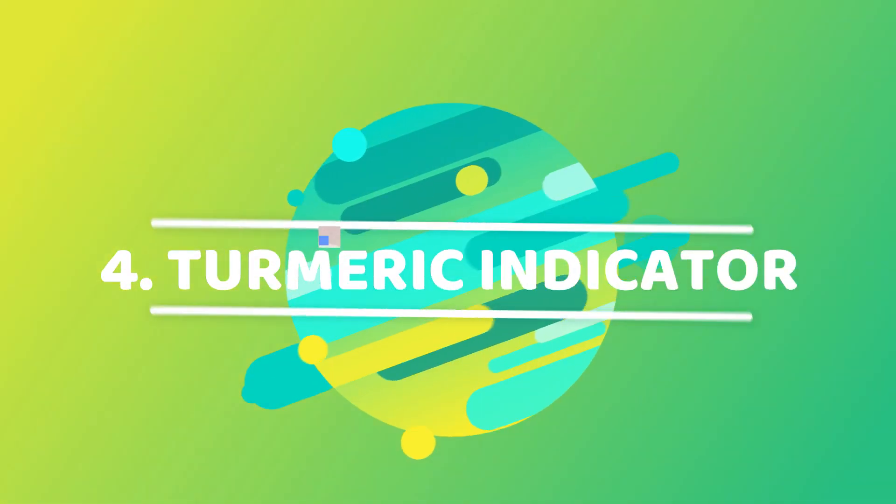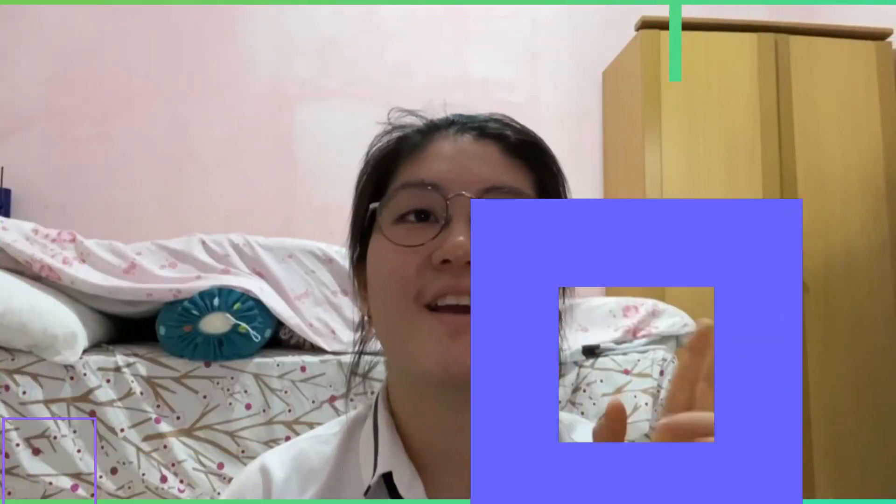That's all for the blueberry experiment as the natural indicator of acids and bases. Now let's move on to the next experiment. Hi, I'm Shelley, and in this experiment of natural indicators for acids and bases, I'm going to use turmeric.